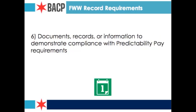We request and receive documents, records, or information to demonstrate compliance with predictability pay requirements. If people are offered work less than 10 days in advance and receive predictability pay, what documents show that it was paid, that there was compliance, or that there was or was not a mutual agreement between employer and employee regarding a shift change? Documentation regarding predictability pay requirements is very helpful.